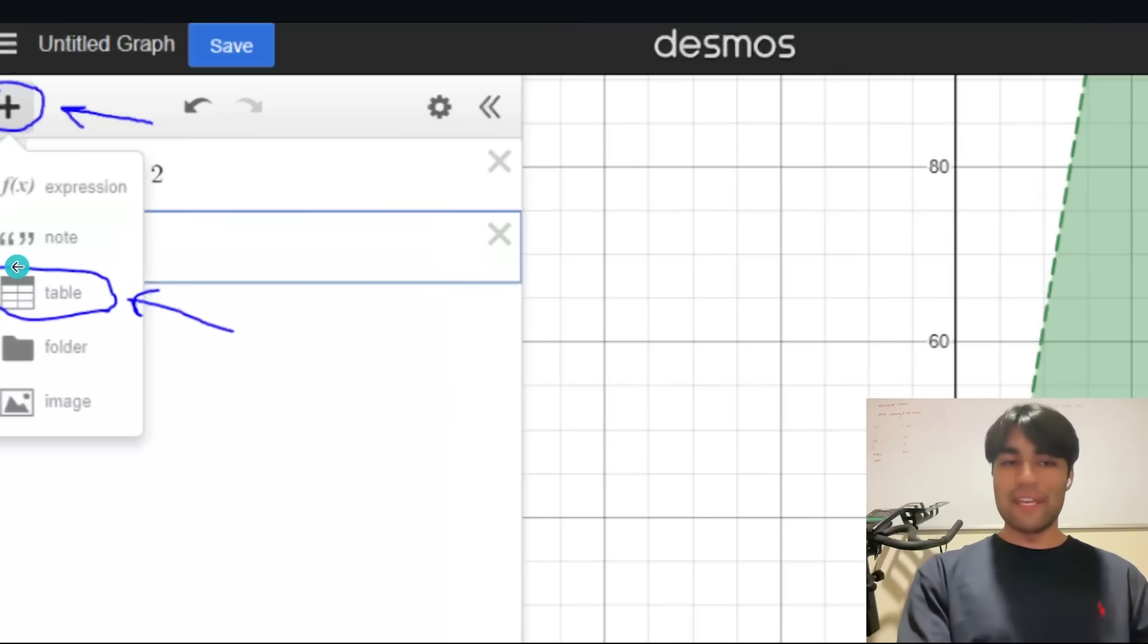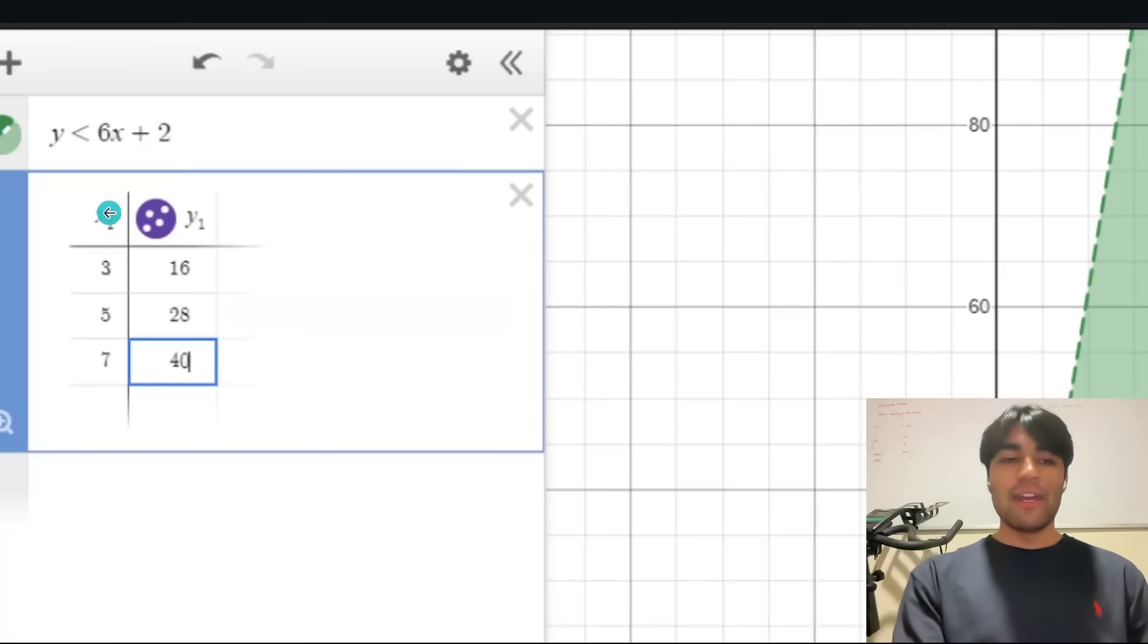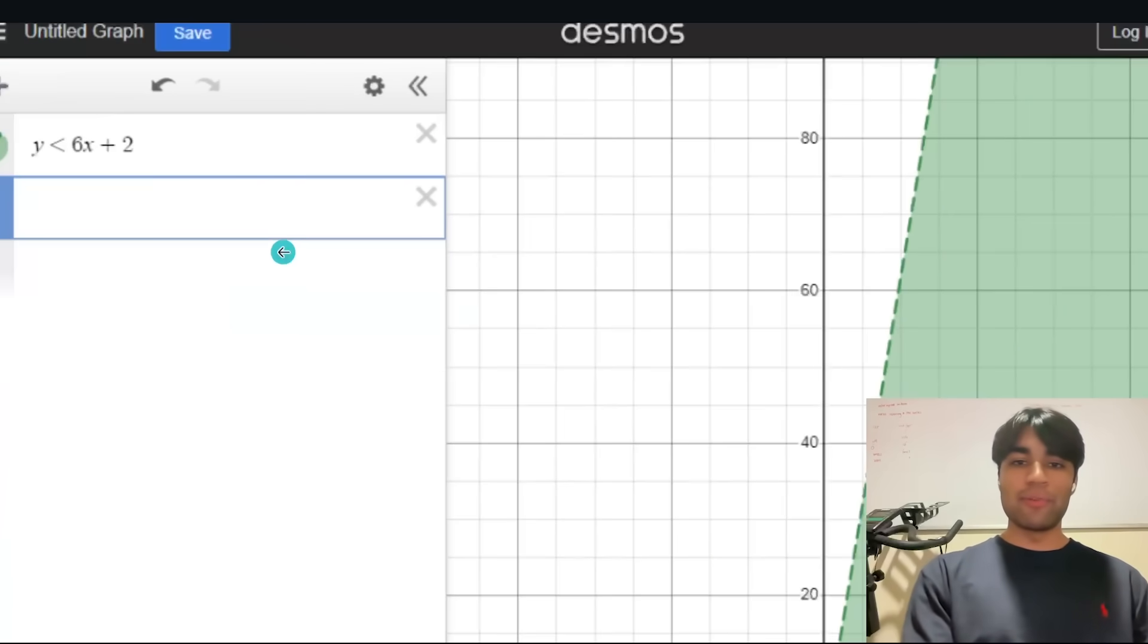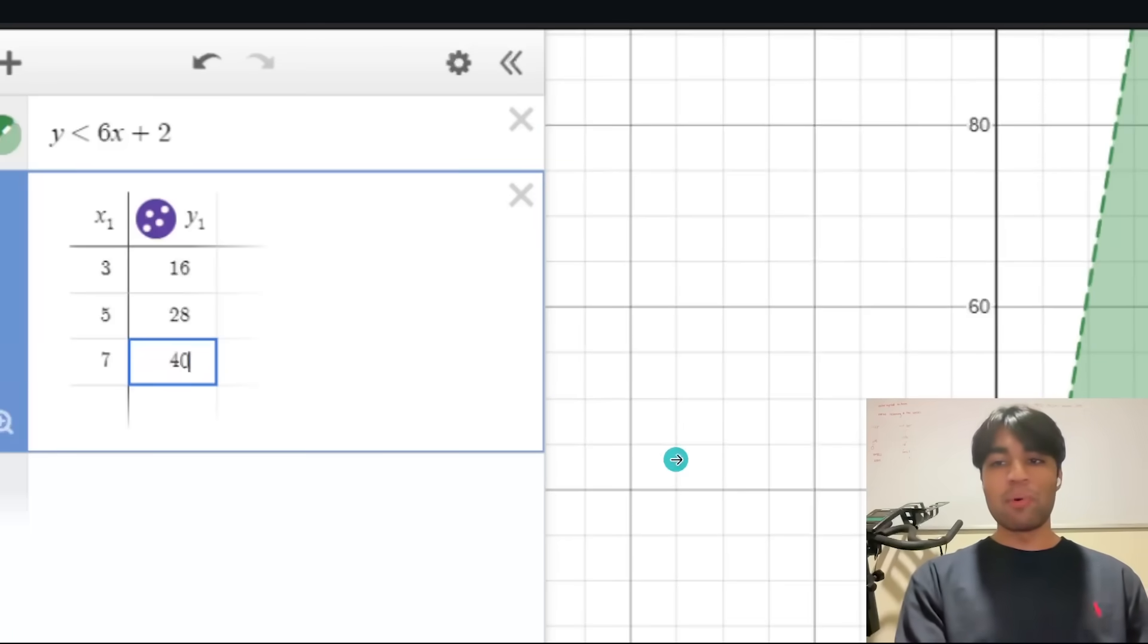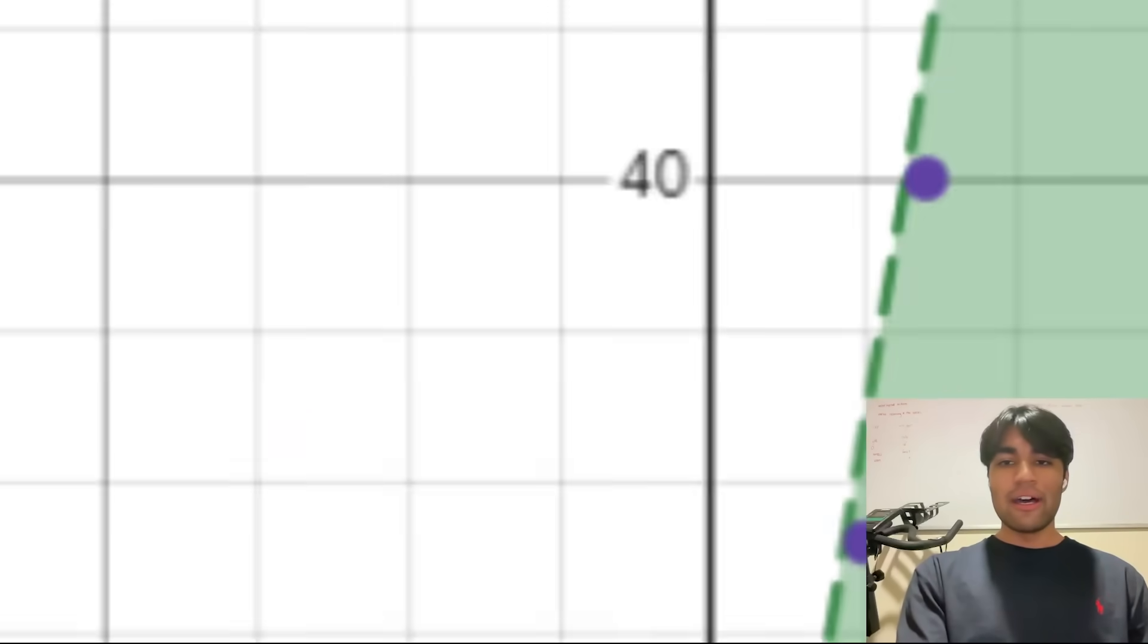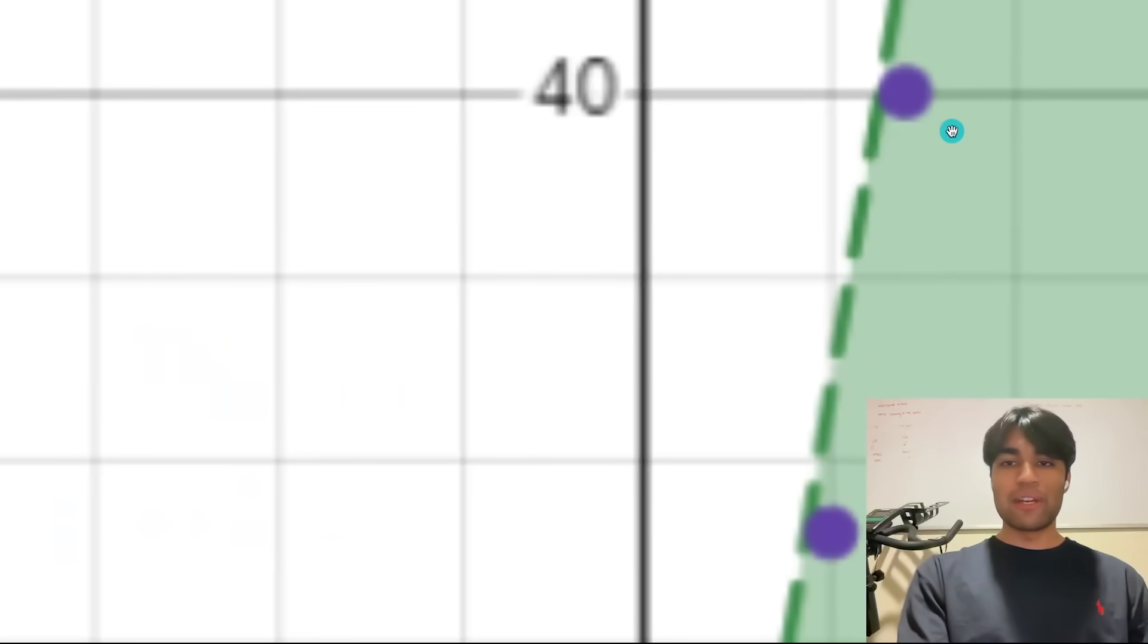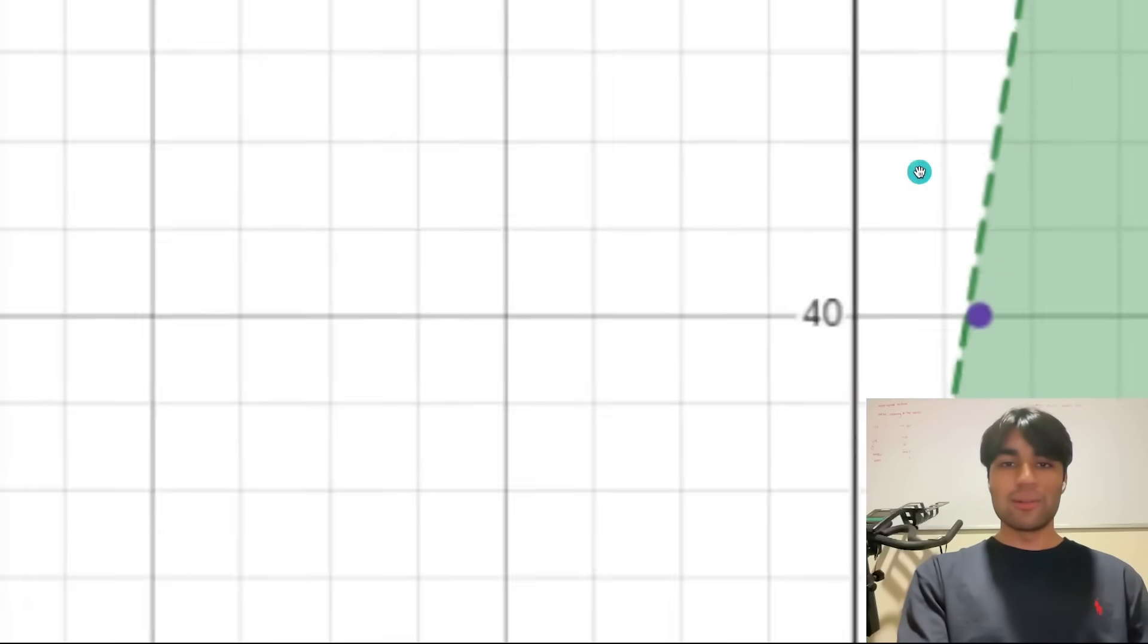That's step number one. Just type it in. And as you can see it gives you this line that it's dashed right because you're not including those points but you include everything after that because it's a less than not like less than or equal to. Then you go to the table. There's a plus icon. Click on that. Press table. And then in the table you have x1 y1. Type in the points. So from over here 316, 528, 740. Put in those points. As you can see they're getting populated up on the right hand side over here. And so those points are getting plugged in. And as you can see there's solutions because they're included in the green section.